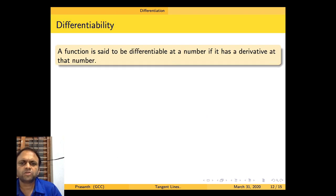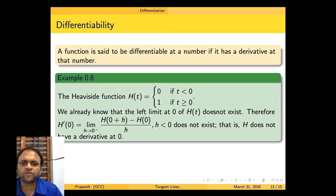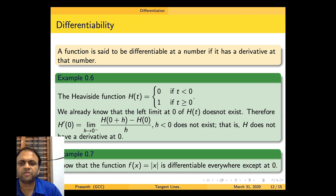A function is said to be differentiable at a number if it has a derivative at that number. For example, the Heaviside function h(t) equal to 0 if t less than 0 and 1 if t greater than or equal to 0: the left-hand limit at 0 does not exist, so the limit as h tends to 0 minus of (h(0+h) minus h(0)) divided by h does not exist, meaning h does not have a derivative at 0.